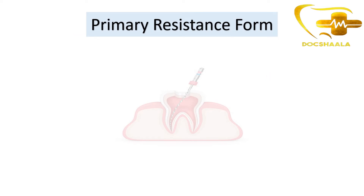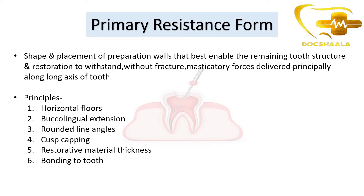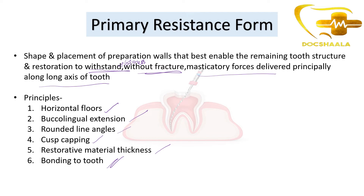Coming to primary resistance form — it is nothing but the shape and placement of walls that best enable the remaining tooth structure and restorative material to withstand without fracture the masticatory forces delivered principally along the long axis of the tooth. The principles we follow to obtain primary resistance form are: horizontal floors, buccolingual extensions, rounded line angles, cusp capping, restorative material thickness, and bonding to the tooth.